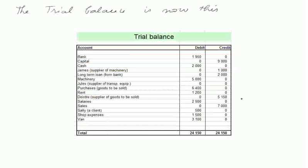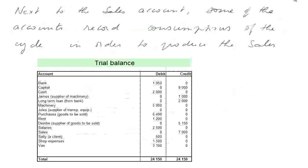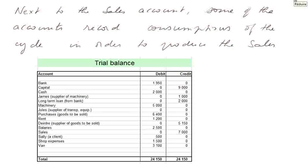That will be an exercise that will show you exactly how things are done. From this trial balance, to compute the income statement, we must extract the sales and the costs, also called charges or consumptions, of the period that correspond to the sales. The difference will be the profit or loss of the accounting cycle.